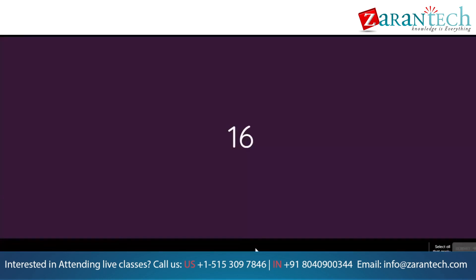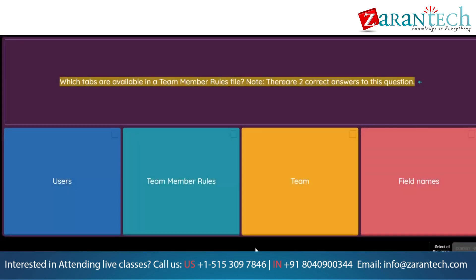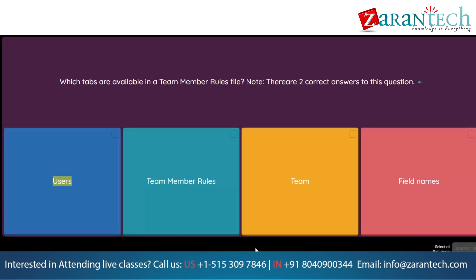Question: Which tabs are available in a team member rules file? Note: there are two correct answers to this question. Option 1: Users. Option 2: Team member rules. Option 3: Team. Option 4: Field names.